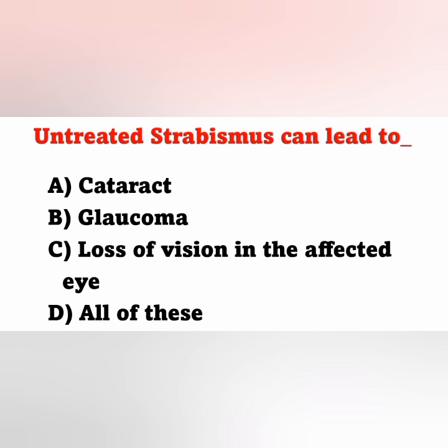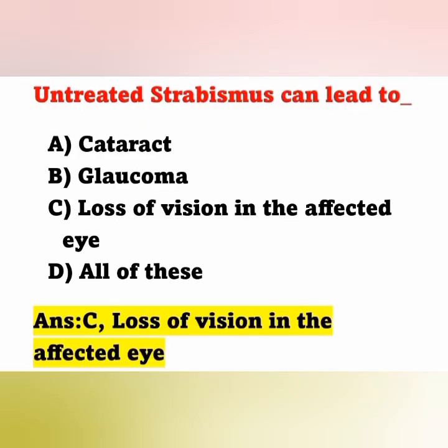Next question: Untreated strabismus can lead to — Option A: Cataract, Option B: Glaucoma, Option C: Loss of vision in the affected eye, Option D: All of these. Strabismus is a vision disorder in which both eyes do not line up in the same direction. If untreated, it may cause loss of vision in the affected eye — Option C is the correct answer.